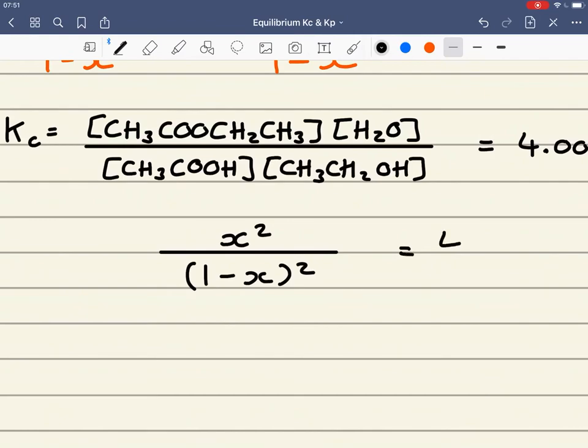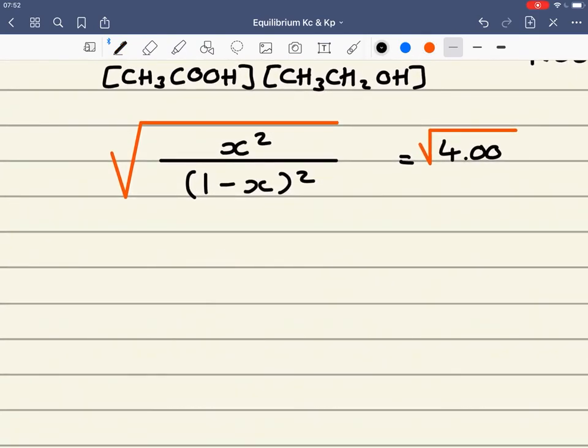That, again, is equal to 4. Now, to solve this, we need to solve this for X. It would involve a quadratic equation, but we can simplify this so that is not necessary. If I square root both sides, then that simplifies to 2. So X over (1 minus X) is equal to 2.